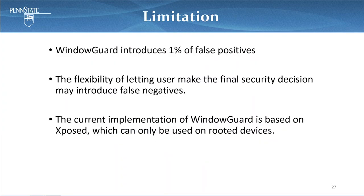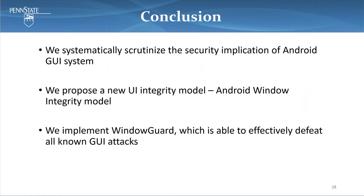WindowGuard does have some limitations. First, it introduces 1% false positives, mostly due to particular functionality provided by certain apps. Also, the flexibility of letting the user make the final security decision may introduce false negatives. Finally, the current implementation of WindowGuard is based on Xposed, which can only be used on rooted devices. In conclusion, we systematically scrutinize the security implications of the Android GUI system, propose a new UI integrity model, and implement WindowGuard, which is able to effectively defeat all known GUI attacks.